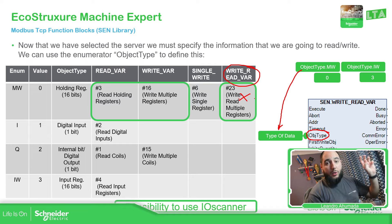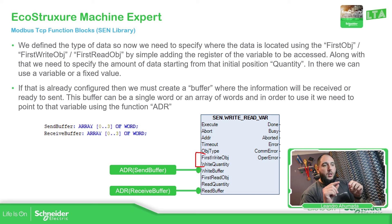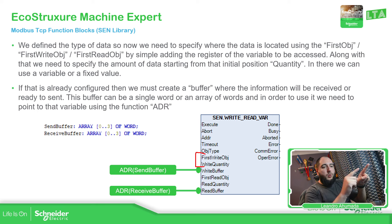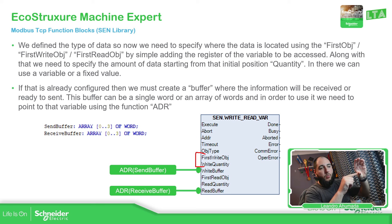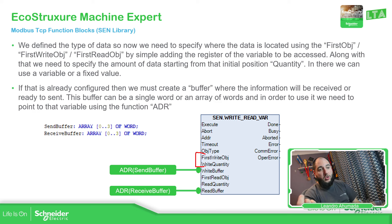We need to define the data that we're going to read and write. First, we need to specify on the device which area you're going to read and write — so we need to define the first object, or first write or first read option, and then the quantity that we want to read and write, so the PLC knows where to look. In these two parameters, we just need to put the address of the device and the amount. If you only want to read one register, just put the number one and the position.